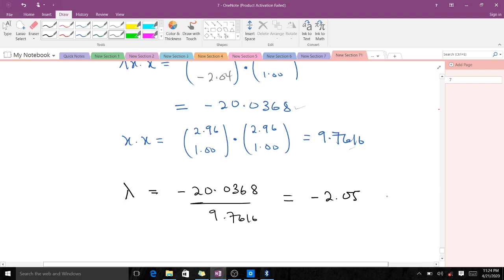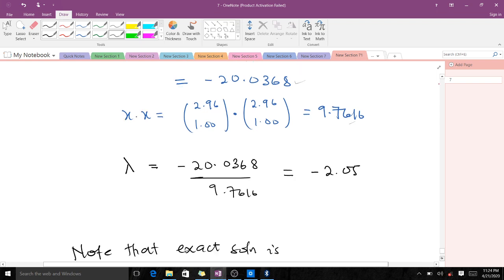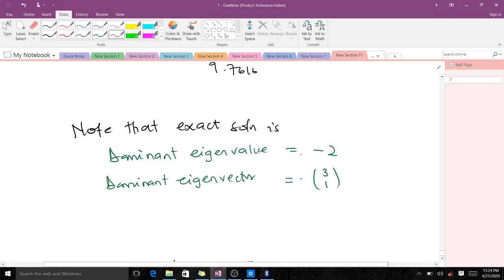Note that the exact dominant eigenvalue is -2. When we use the power method and Rayleigh quotient, we get -2.05. This is an approximated value close to the exact. If we had done more iterations, we would have gotten an even better answer.